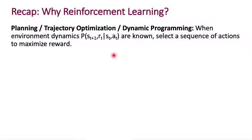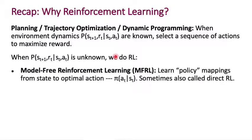Now, it's only in the setting where we don't know these dynamics, when we don't know the state transition dynamics and we don't know the reward function, that's when we do reinforcement learning. And in particular, in model-free reinforcement learning, you could learn policy mappings from state to optimal action. And of course, you can also do this slightly indirectly by learning a Q function, and then using that to determine the policy.